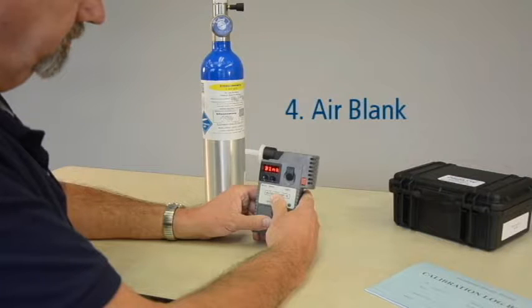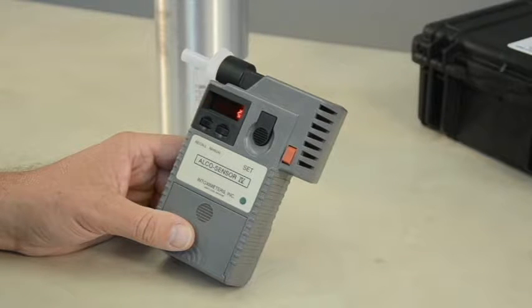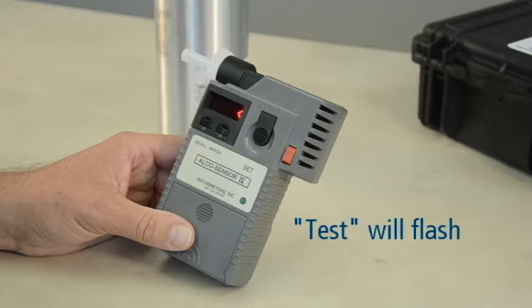An air blank is a procedure that checks the device for any residual alcohol that may remain from a previous test. If the instrument is free of alcohol, it will read .000 for a few seconds. After the device displays the air blank results, it will flash the word TEST.